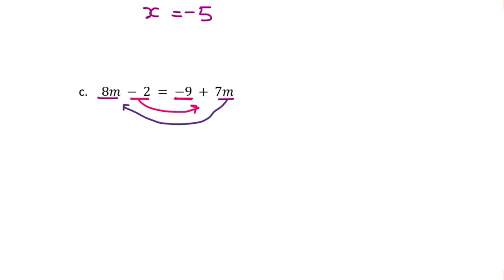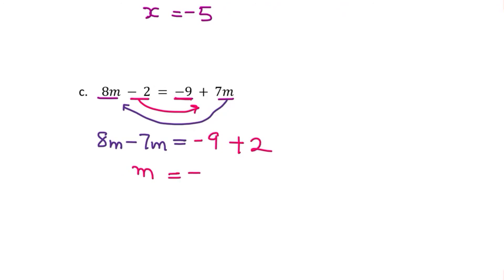Instead of writing out the full subtraction step each time, I change the sign automatically when crossing the equal sign. So if positive 7m is moving to the left side, it becomes 8m minus 7m. Moving negative 2 to the other side makes it positive 2. So 8m minus 7m on the left gives m, and this equals negative 7. That is the answer.